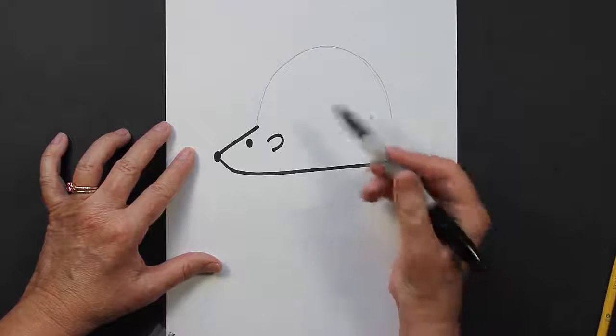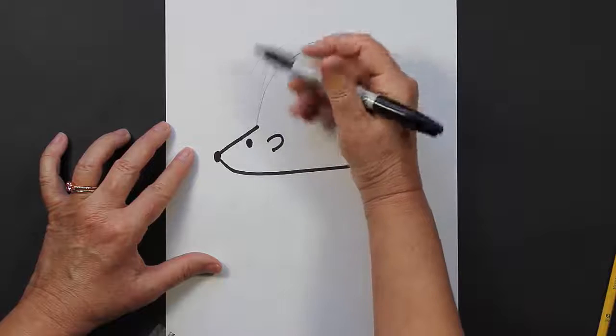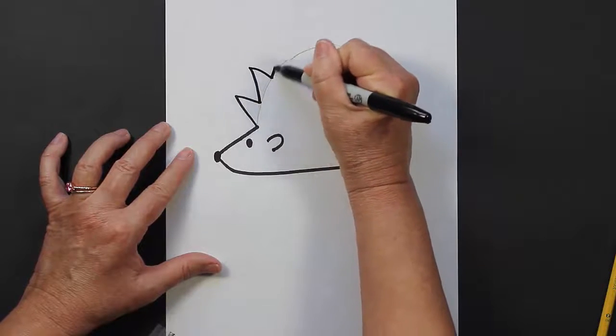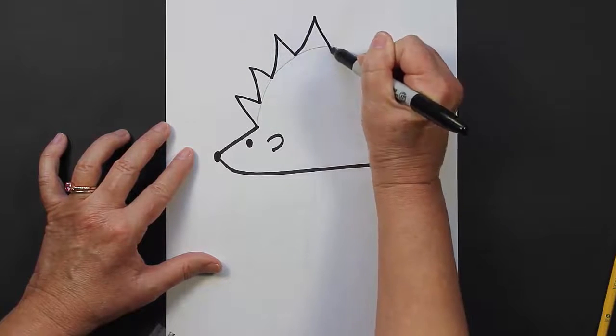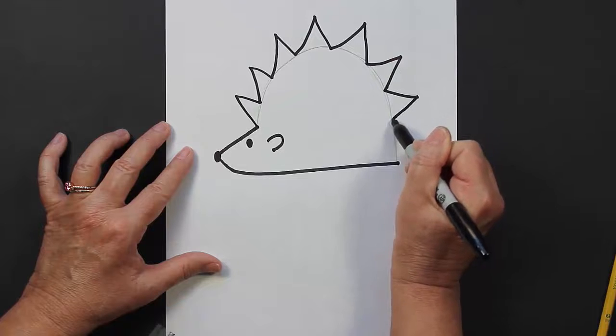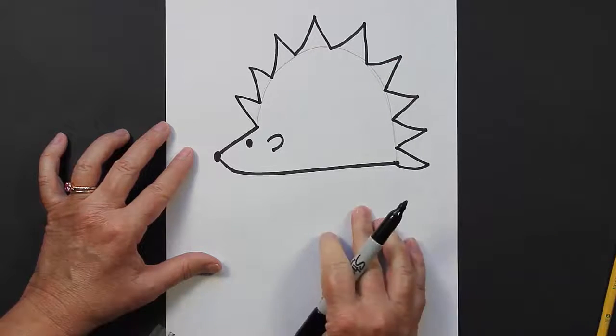When you're actually using your marker or your crayon, you can come out like this and just go up and down, and then you use that pencil line as a guide.